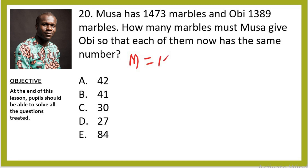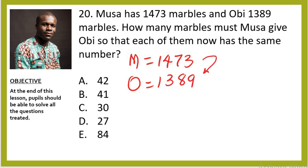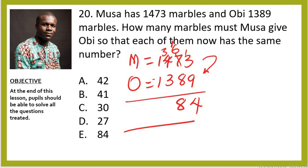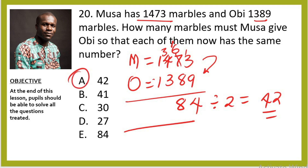Question 20: Musa has 1,473 marbles and Obi has 1,389 marbles. How many marbles must Musa give Obi so that each has the same number? First subtract: 1,473 − 1,389 = 84. But if you give all 84 away, Obi's total exceeds Musa's. So divide 84 by 2 = 42. Musa must give Obi 42 marbles. The right option is A.